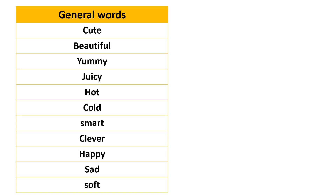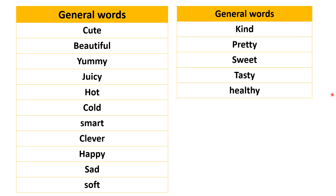Now we are going to see general words. General words are basically quality words. Examples include: cute, beautiful, yummy, juicy, hot, cold, smart, clever, happy, sad, soft, kind, pretty, sweet, tasty, and healthy. These are all general words.